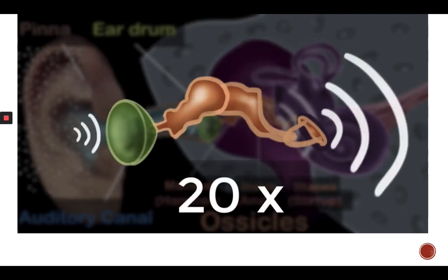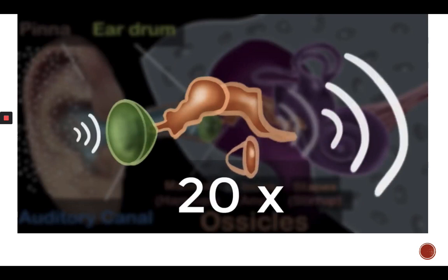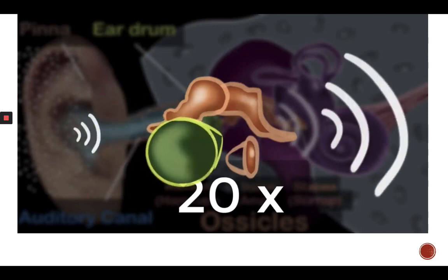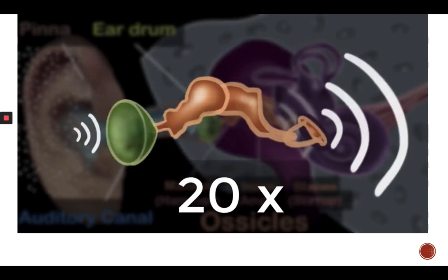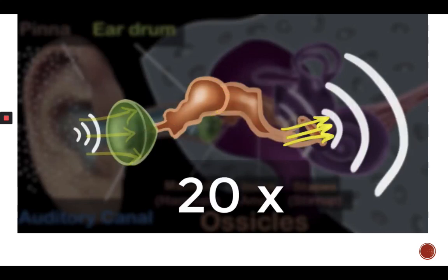How do they do that? Look at the base of the stapes — it has a very small area compared to that of the eardrum. So when force gets transmitted from the eardrum to the stapes, it gets concentrated in a tiny area. When you concentrate force in a very tiny area, you increase its pressure.